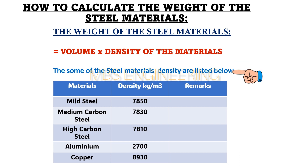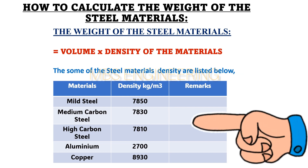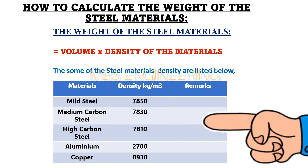For a better understanding, here are the densities of some commonly used materials: mild steel, medium carbon steel, high carbon steel, aluminum, and copper.